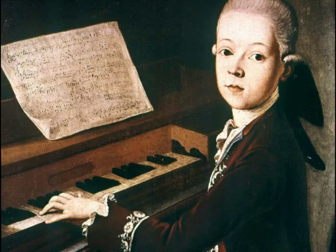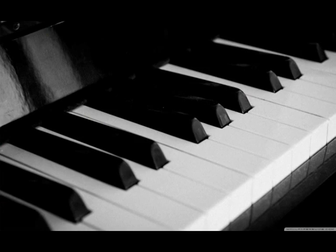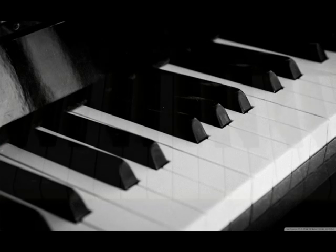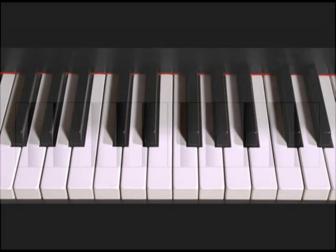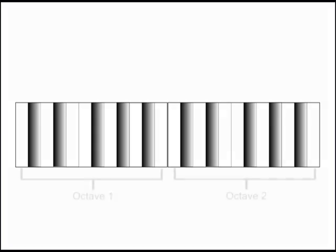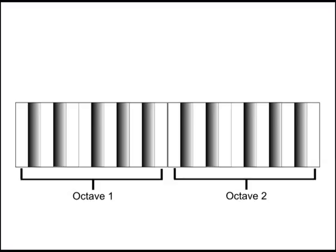Mozart could play Twinkle Twinkle Little Star when he was just four years old. By that age, when he looked at a piano keyboard, rather than seeing a lot of black and white keys, he saw patterns. In his mind, he would split the keyboard up into groups called octaves.